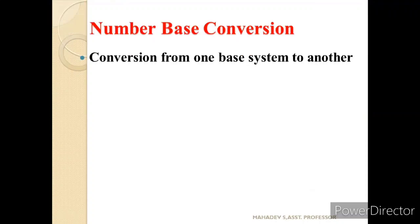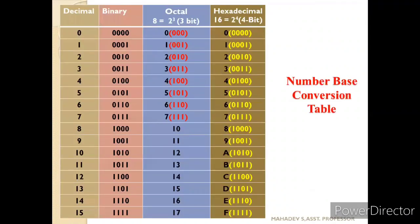For number base conversion, in today's concept, we will be seeing about conversions from one base system to another base. In order to understand the conversion, as we already seen four number systems — decimal, binary, octal, and hexadecimal — hexadecimal is represented by 16, and when it is converted to binary, it requires 4 bits, as 2 to the power of 4 is 16.